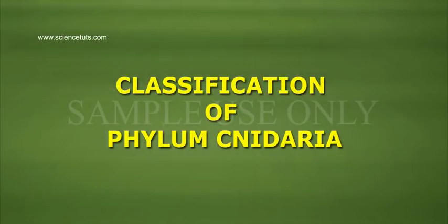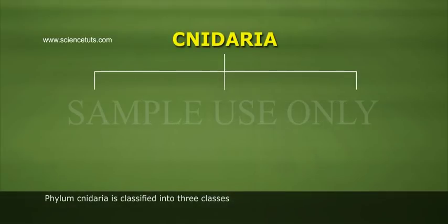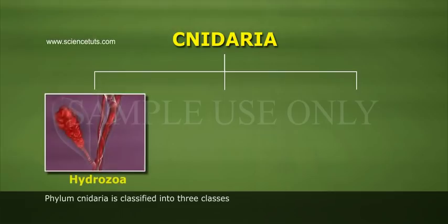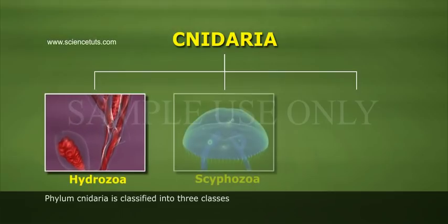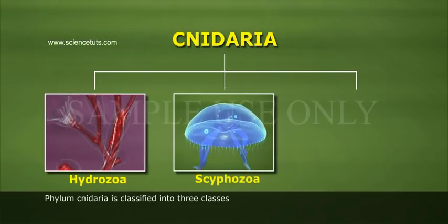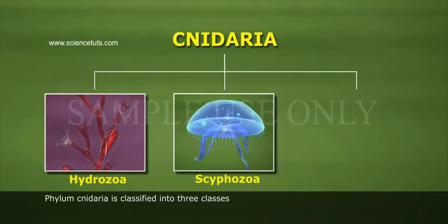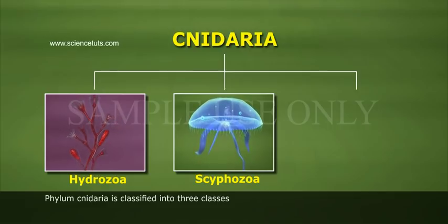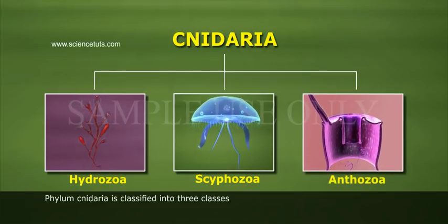Classification of Phylum Cnidaria: Phylum Cnidaria is classified into three classes. Class 1: Hydrozoa. Class 2: Scyphozoa. And Class 3: Anthozoa.